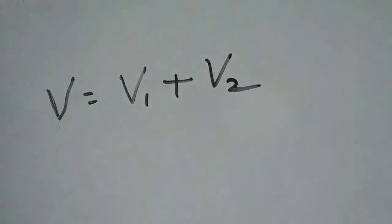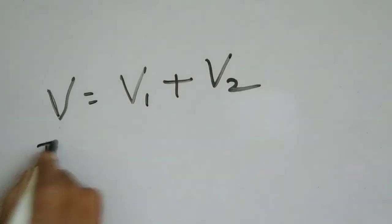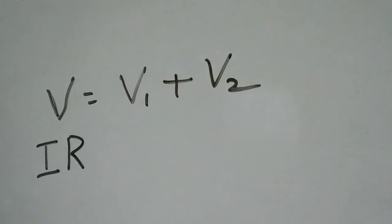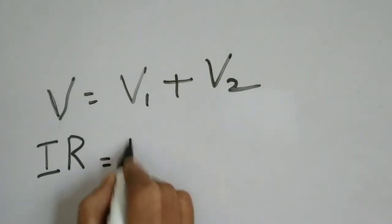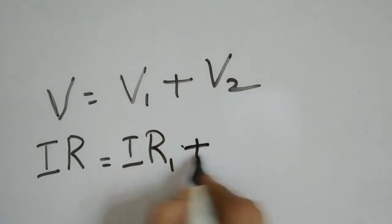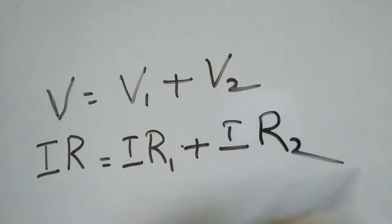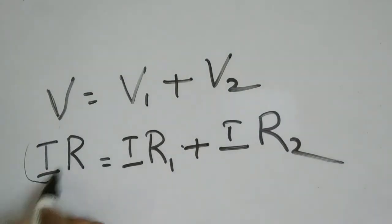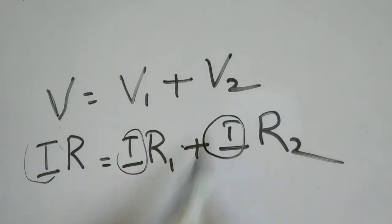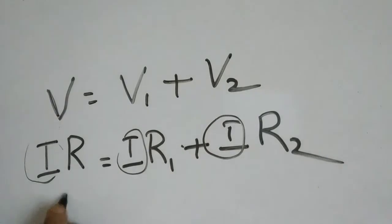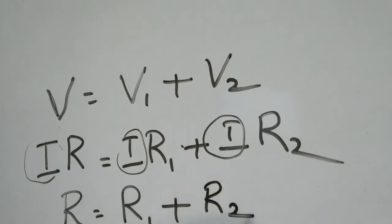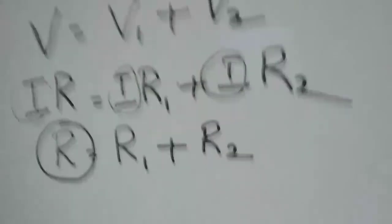That means the total voltage V splits up into V1 and V2 — that is V = V1 + V2. In a series circuit, what is V according to Ohm's law? V = IR. So V/I = R, or V = IR = IR1 + IR2.